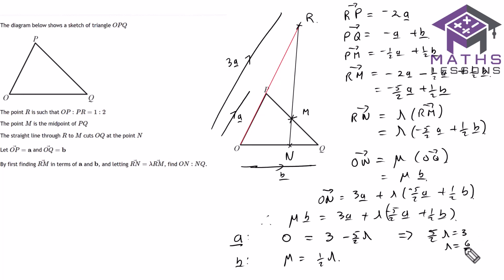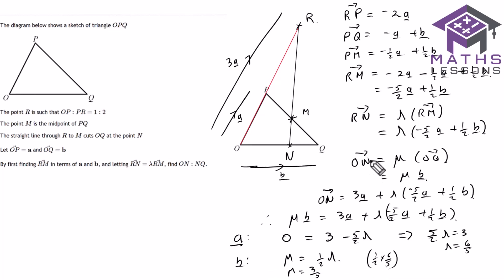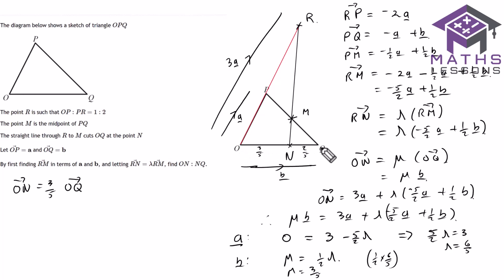Using the a equation: five over two lambda equals 3, so lambda equals 6 over 5. Remember we wanted lambda bigger than 1 because we had to go further than RM to reach N — and 6 over 5 is indeed bigger than 1. Then mu equals a half times 6 over 5, so mu equals 3 over 5. Mu is my fraction of the distance along OQ, so ON equals 3 over 5 of OQ.